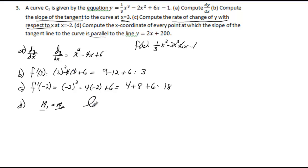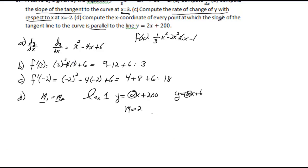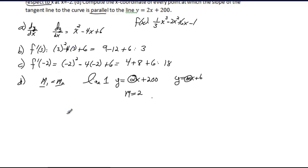We recognize the line y equals 2x plus 200 falls in the form y equals mx plus b, where m is our slope. Therefore our slope here is 2. To find all points where the slope equals 2, we set our derivative equal to 2. So x squared minus 4x plus 6 equals 2.